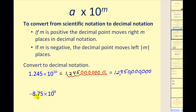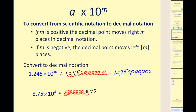In the second example, we have negative 8.75 times 10 to the power of negative 8. Multiplying by a negative power of 10 makes the decimal form less than negative 8.75. We move the decimal point left eight places — after moving it once there are no more digits, so we add seven zeros. Our number in decimal notation, remembering it is negative, is negative 875 ten-billionths.